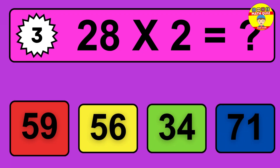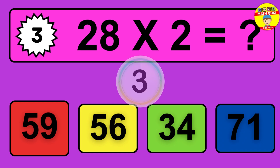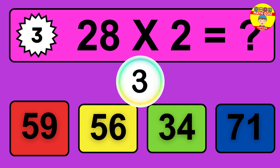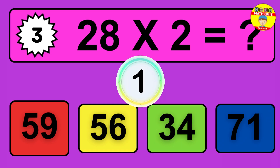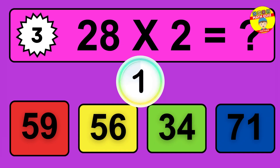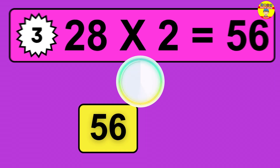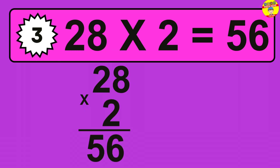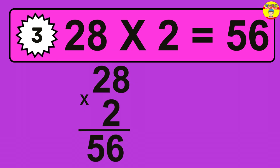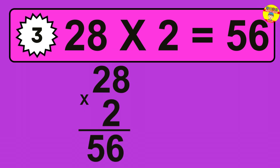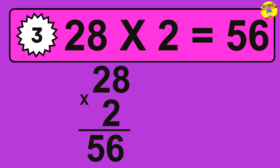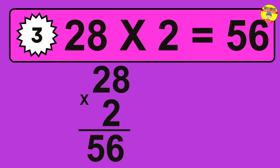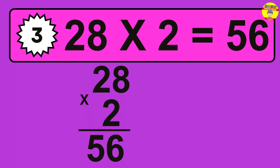Question 3. 28 times 2 equals what? The answer is 28 times 2 is 56. To calculate, we have 28 groups with 2 balls each one. So, how many balls do we have? 56 balls.